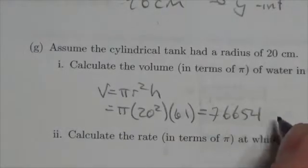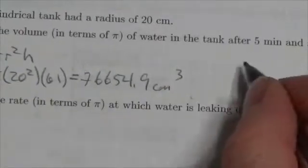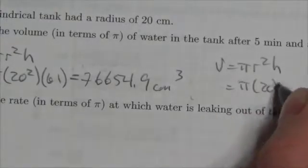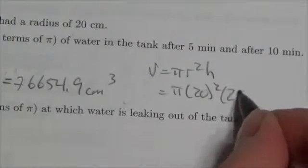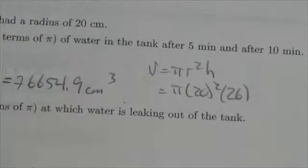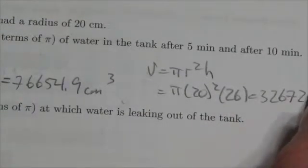And if we do it the other way here, volume is equal to πr²h, where this is going to be 20 squared, and after 10 minutes the height was 26. So I'll do that real quick on my calculator: 20 squared times 26. The answer in this case was 32,672.6 centimeters cubed.